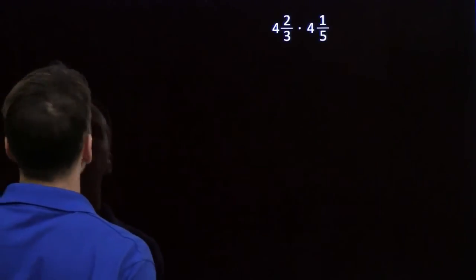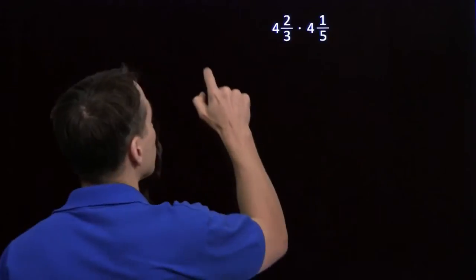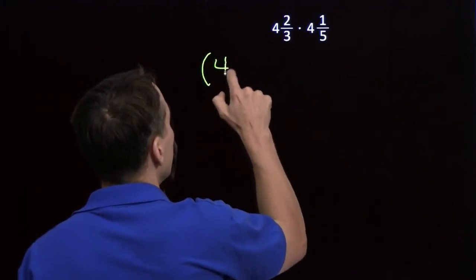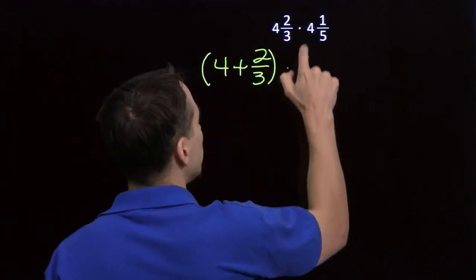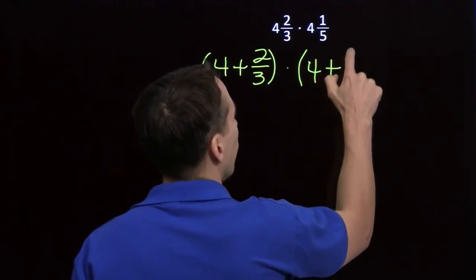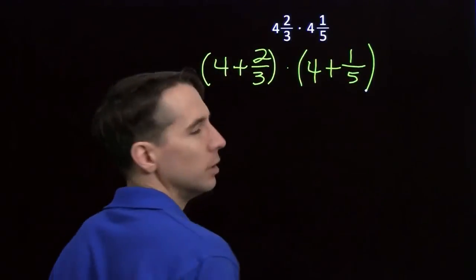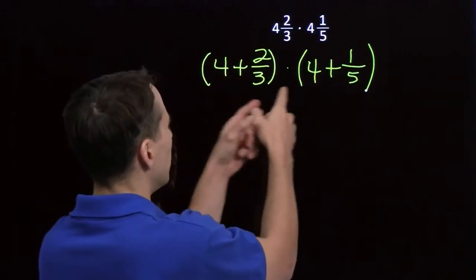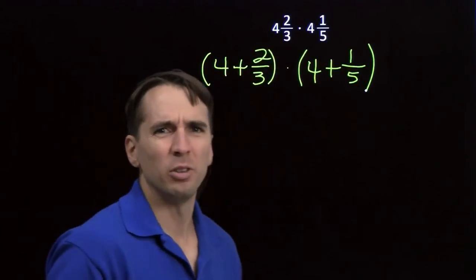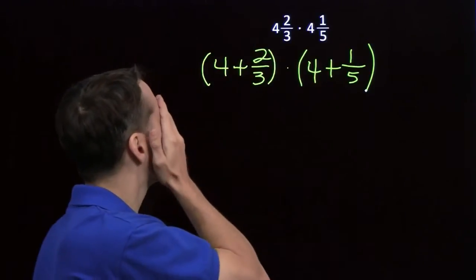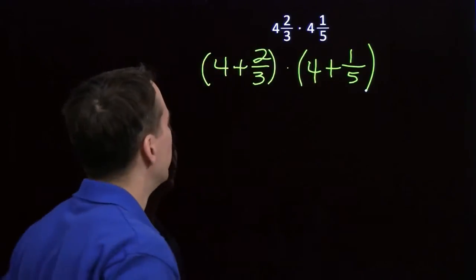Now, let's try multiplying two mixed numbers. Once again, we have a strategy that works. We're going to break this up into integer part and fractional parts. So we have 4 plus ⅔ times 4 plus ⅕. Oh, yuck. If we do the distributive property, we'll have to multiply this whole thing by 4 and then this whole thing by ⅕. We'll have to do the distributive property a couple more times. That's just annoying. Maybe there's got to be a better way to do this.